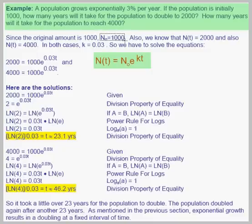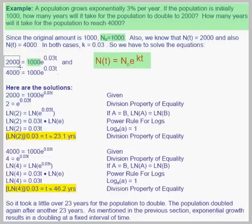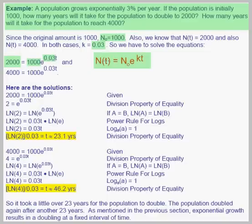In this case n sub not is 1,000, so we replace n sub not with 1,000. We know that n as a function of t equals 2,000 and we want to find the value of t that gives us that. So we plug in 2,000 for n of t and get 2,000 equals 1,000e. We also know what k is — k is the constant that is the growth rate, in this case 3% per year. We write 3% as .03, so we get 2,000 equals 1,000 times e to the .03t power.